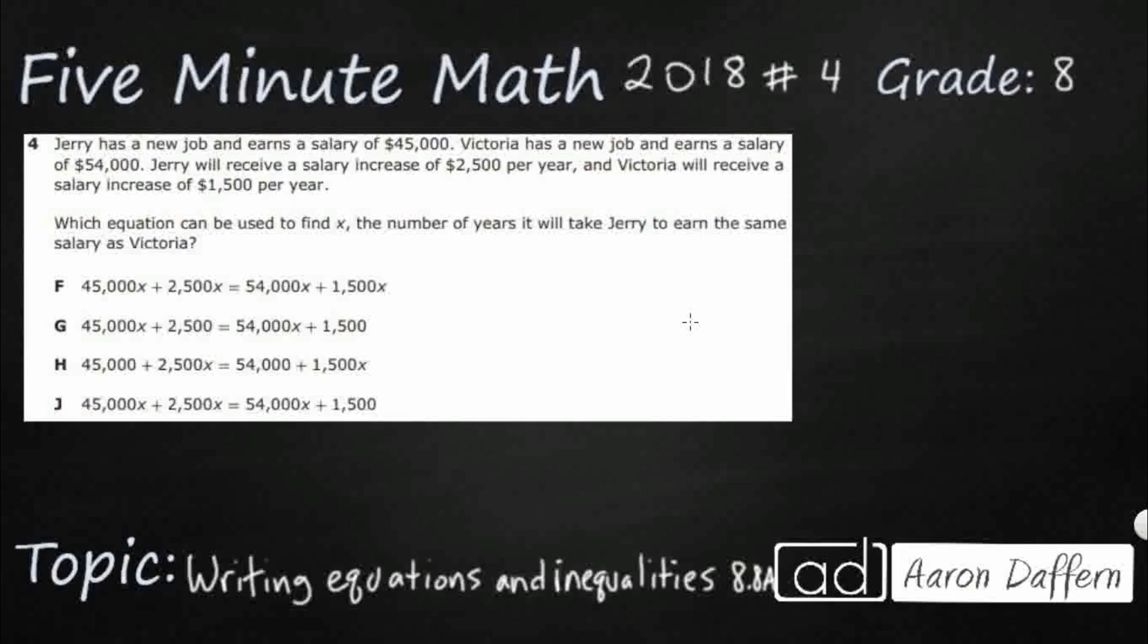So Jerry has a new job, earns a salary of $45,000. Victoria's got a new job, earns a salary higher, $54,000. But Jerry's going to receive a salary increase of $2,500 per year, and Victoria's going to receive a salary increase of $1,500 per year. So Victoria earns more now, but is receiving less of an increase. Jerry earns less, but is receiving more of an increase. That's interesting.